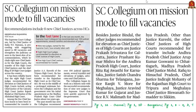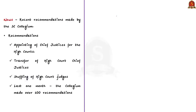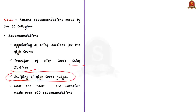Now look at this news article regarding the Supreme Court Collegium System. In the past one month, the Collegium System has been constantly in the news because it has made a lot of recommendations. For example, it recommended the appointment of 8 new Chief Justices of High Courts, transfer of 5 High Court Chief Justices, and shuffling of 28 High Court judges. So in the last one month, the Collegium System has recommended numerous judicial appointments and several transfers. This is why this topic is very important.